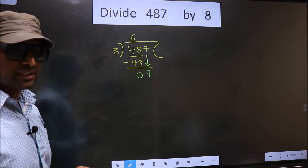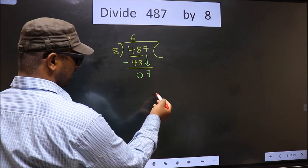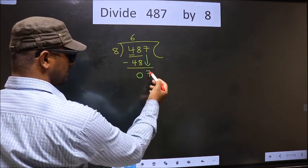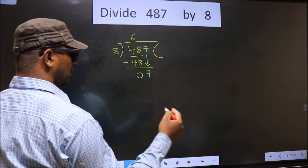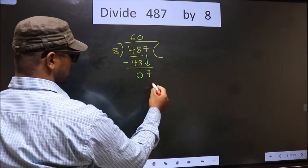Instead, what you should think of is, what number should we write here? If we write 8, that is 7. So what we do is, we take 0 here. So 8 into 0, 0.